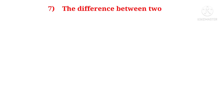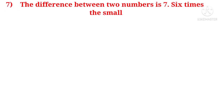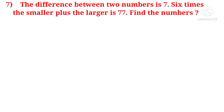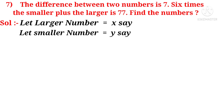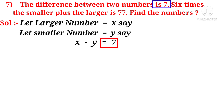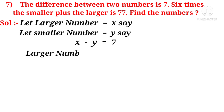Now let us do the seventh problem. The difference between two numbers is 7. Six times the smaller plus the larger is 77. Find the numbers. Solution: let the larger number equal X and the smaller number equal Y. Observe the word 'difference' — it means minus. So, X minus Y equals 7, which gives X is equal to 7 plus Y.